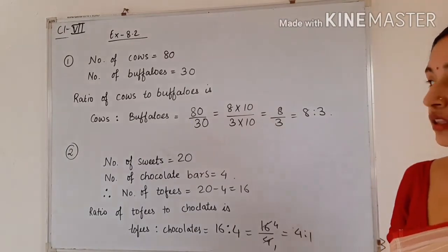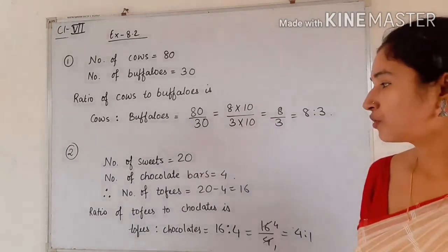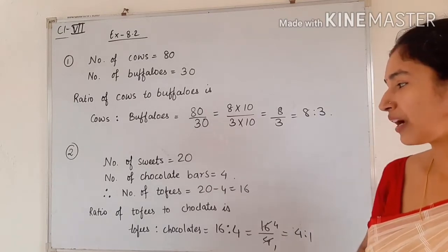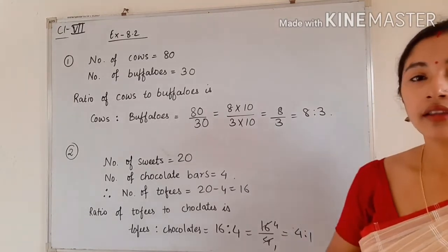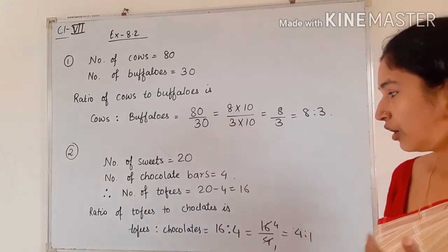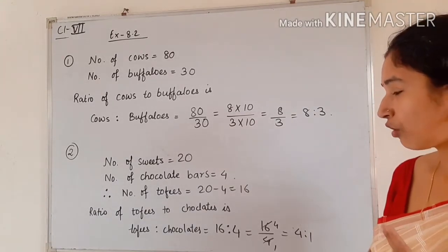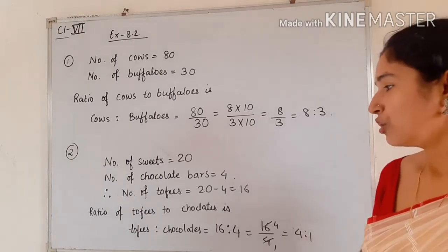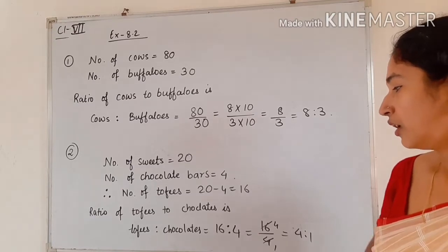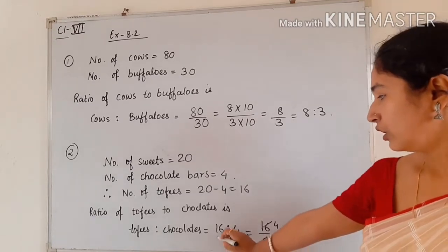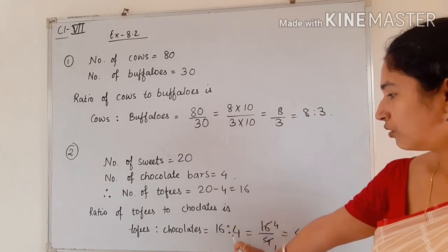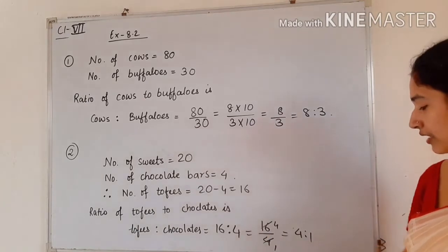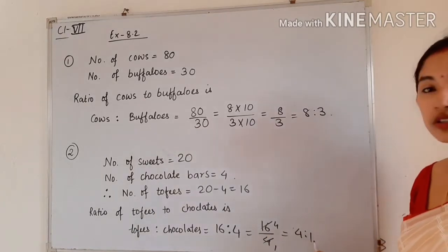In question number 2, the total number of sweets in a packet is given as 20, with 4 chocolate bars and the remaining being toffees. The number of toffees will be 20 minus 4, that is 16. The ratio of toffees to chocolates is 16 is to 4, which after cancelling gives 4 is to 1.